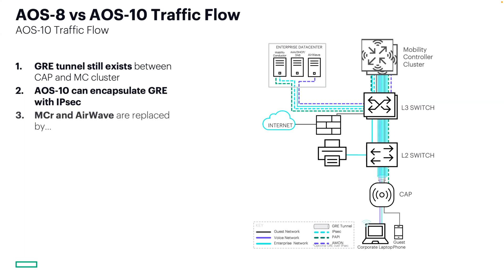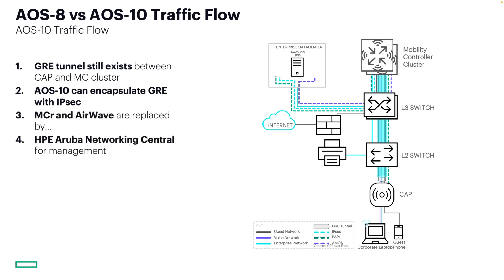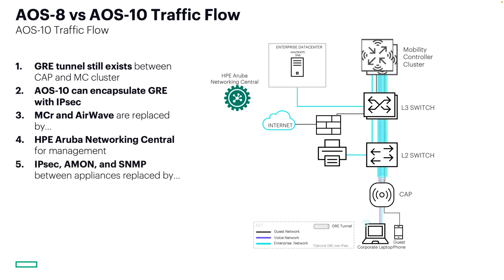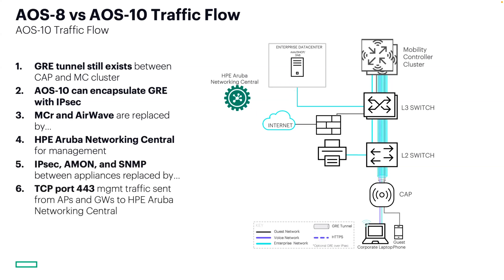Although AOS 8 uses only GRE tunnels by default, AOS 10 now offers IPSec over GRE so that you can encrypt both control and data traffic end-to-end if your deployment or security policies require it. Next, the mobility conductor and AirWave appliances used by AOS 8 are replaced by Central. And in turn, IPSec, AMON, and SNMP traffic between appliances is replaced by TCP port 443 management traffic sent from APs and gateways to Central.